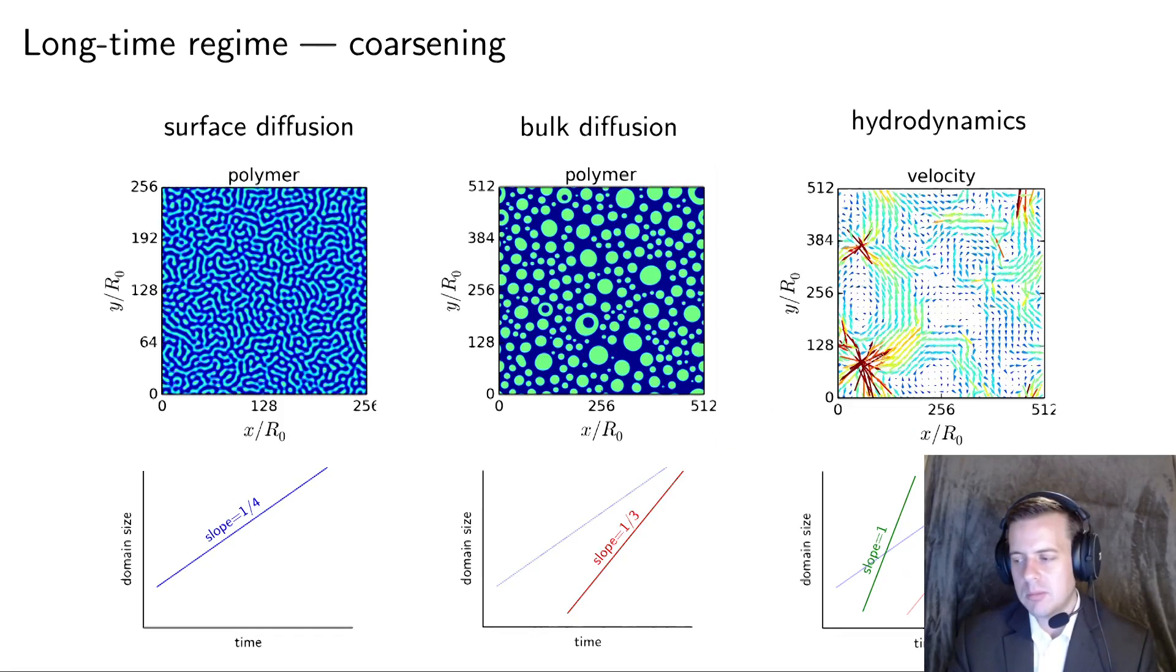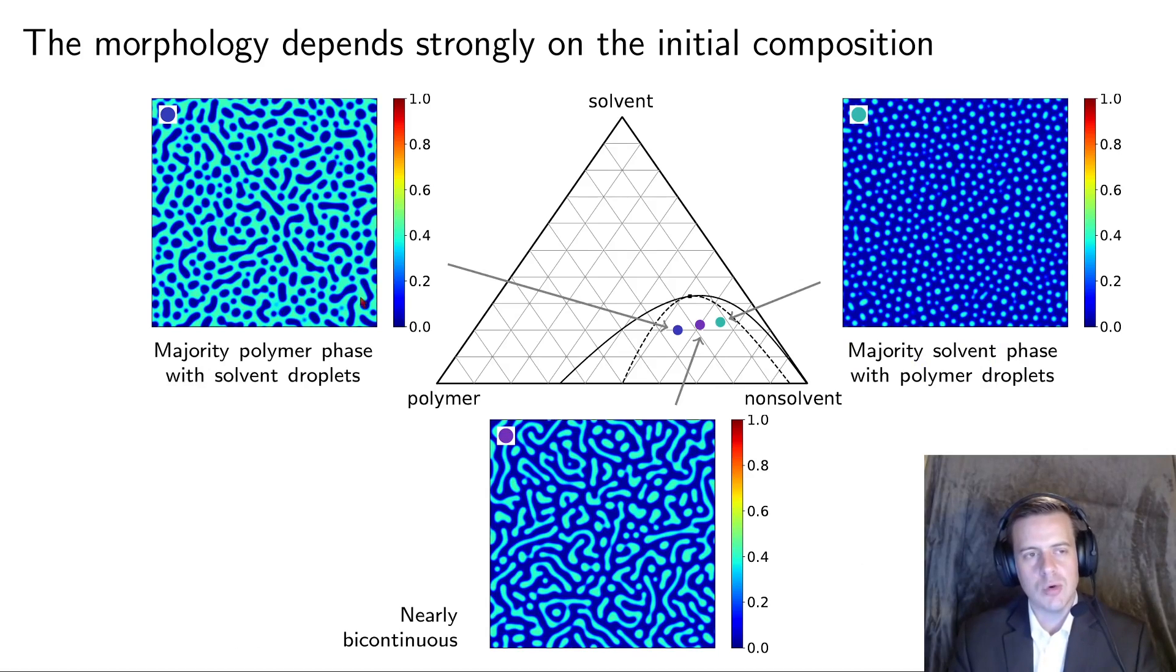The slope of that plot on the log log scale is indicative of the mechanism of how the coarsening is happening. What you were seeing was an example of what's called surface diffusion, where the diffusivity along the boundaries of these different domains dominates, and that gives rise to a one quarter scaling. If you have fast bulk diffusion instead, you get what's the classic Ostwald ripening, which has a slope of one third. And if you have strong Marangoni flows that are internally generated, you get a much faster coarsening rate, which has a slope of one. The last thing you need to understand is that the morphology of the system depends strongly on the initial composition.